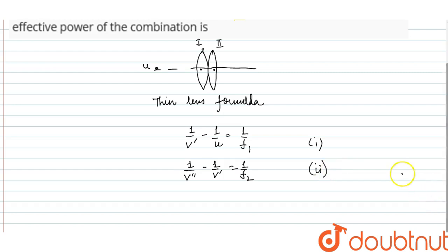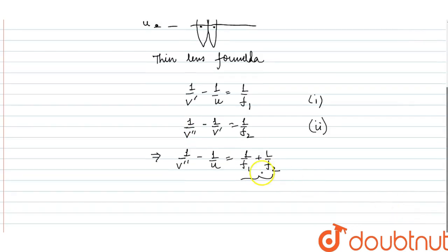When we add these equations, the middle terms cancel. This gives us the effective focal length formula: 1/f = 1/f1 + 1/f2.